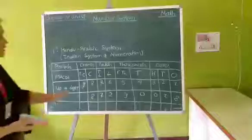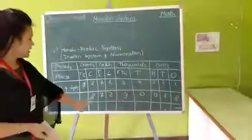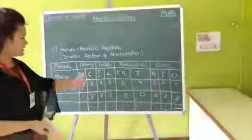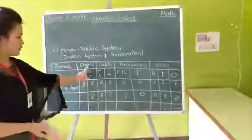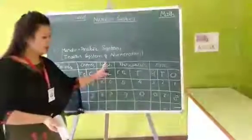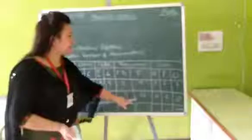How will you read this? Eight crore because eight is in crore place. Eight crore, 72 lakh, nine zero, 90 thousand 18.